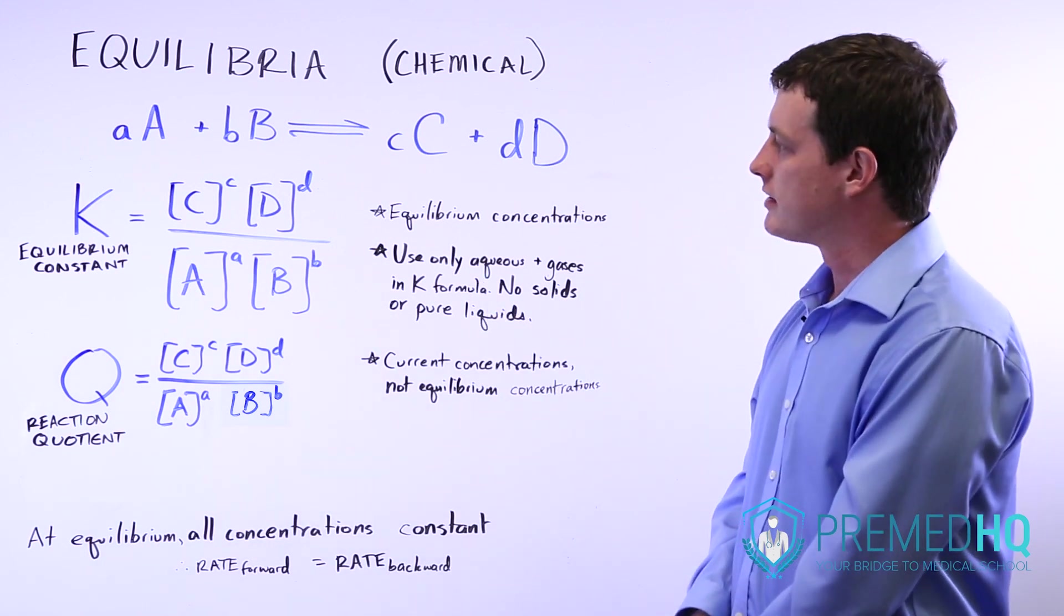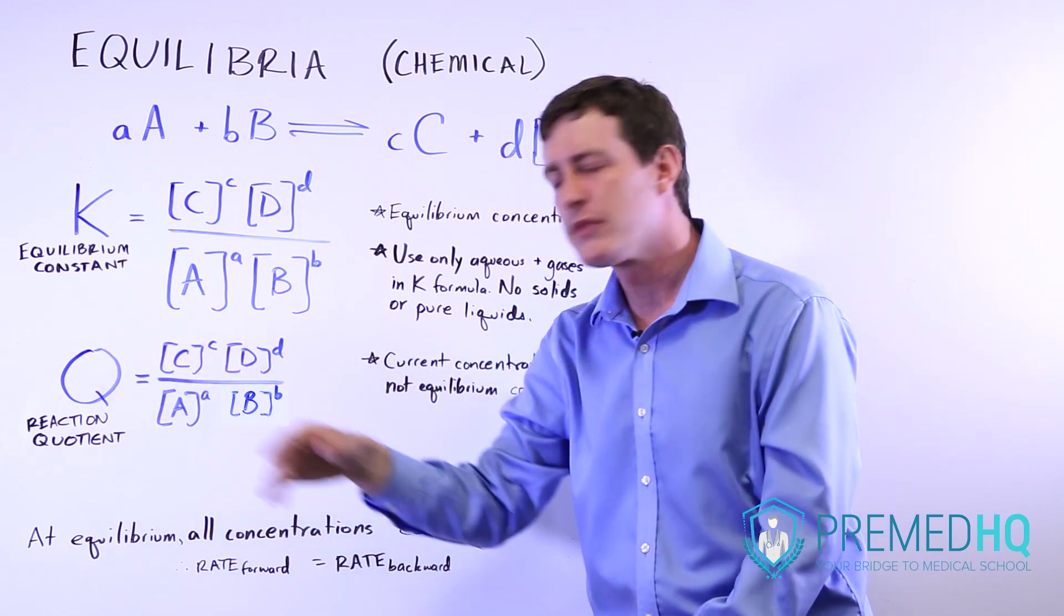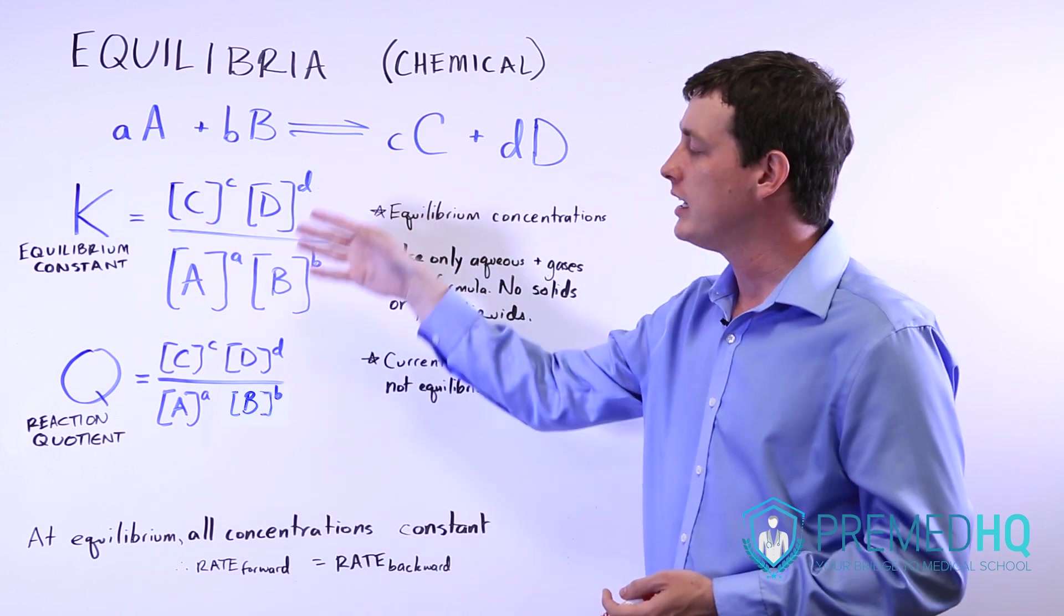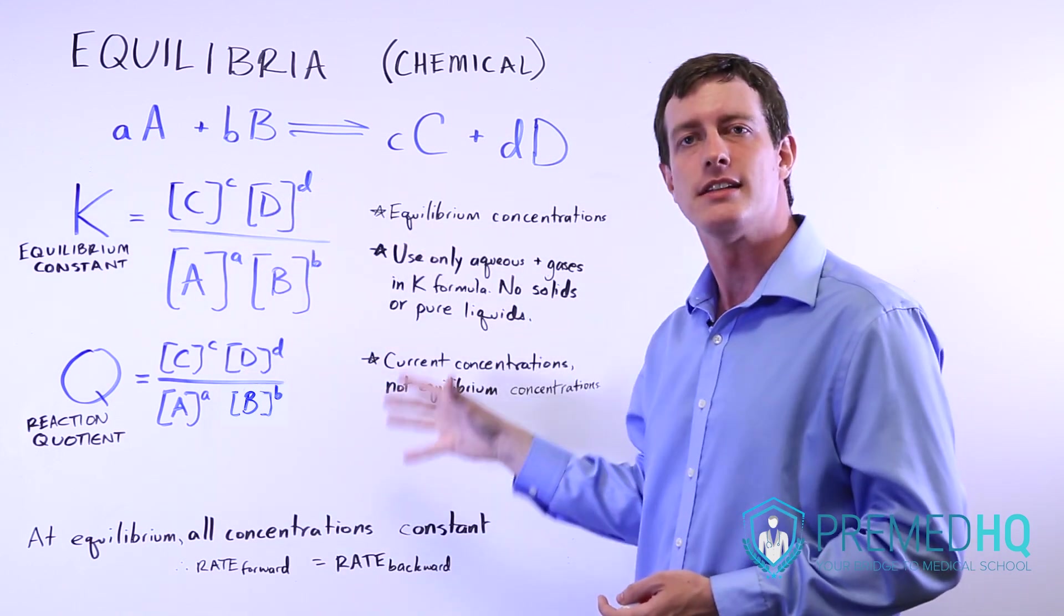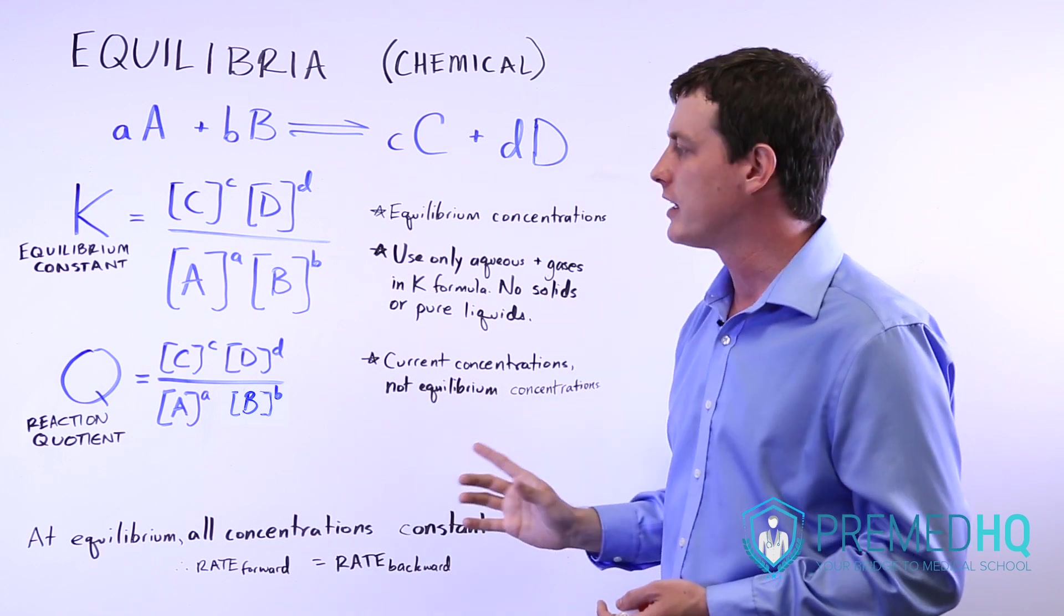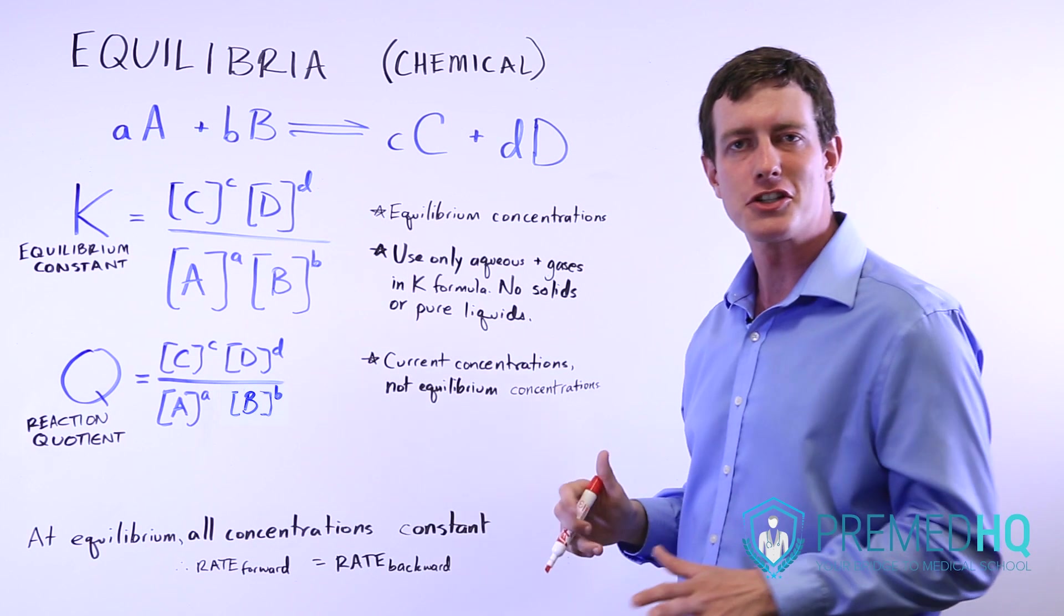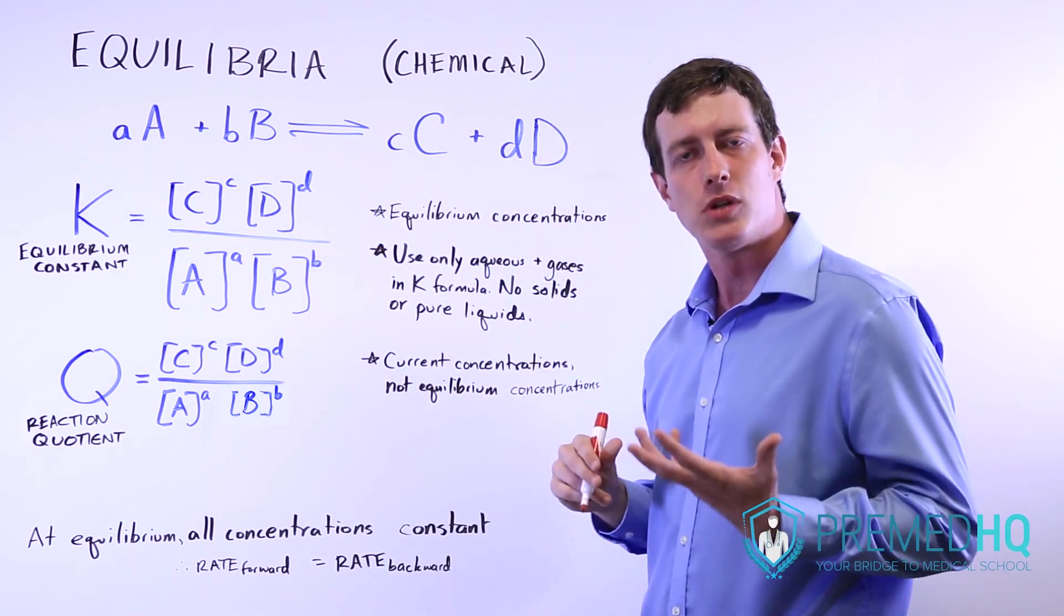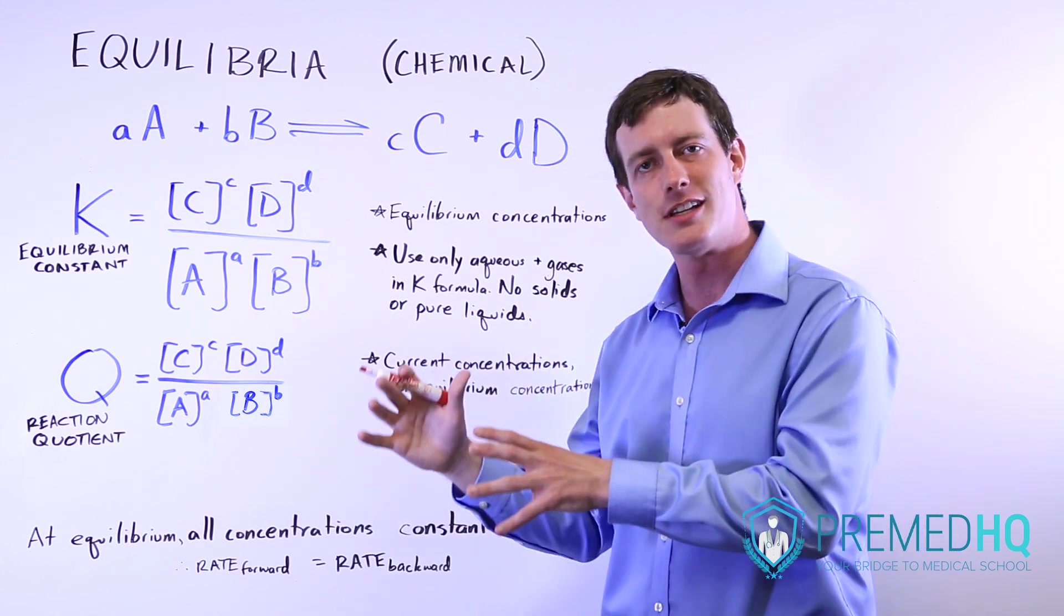When you're working with equilibrium constants, you're often going to run into a quantity known as Q. And Q is the reaction quotient. The difference between K and Q, it has nothing to do with the formula. Look, these formulas are exactly the same. But what is different is that the concentrations you use for Q are the current concentrations of each of those species, rather than the ones at equilibrium.